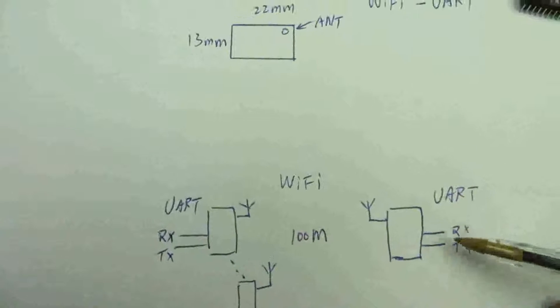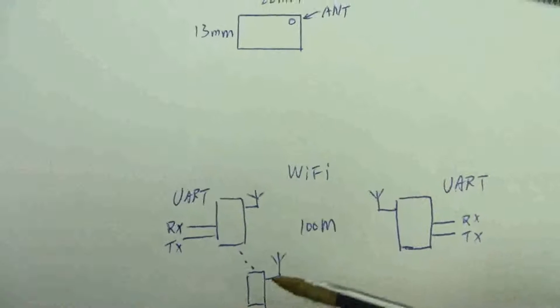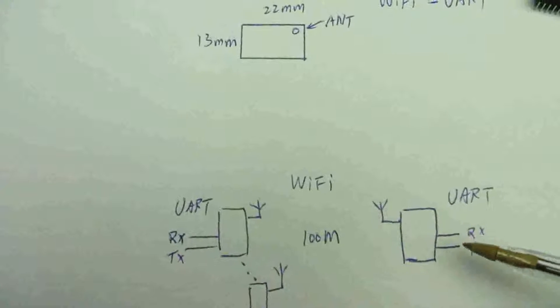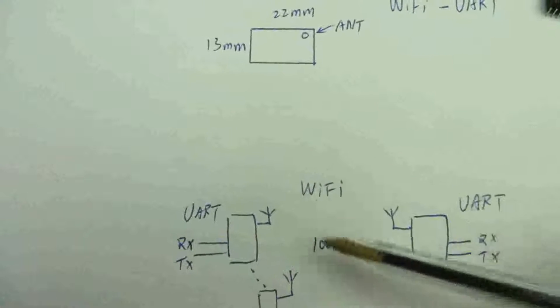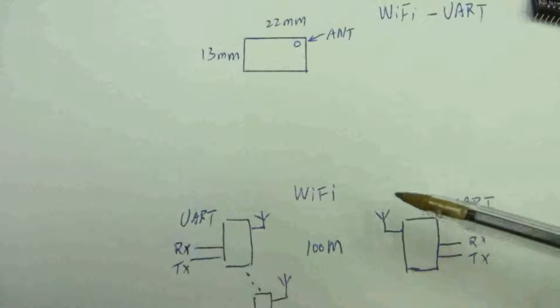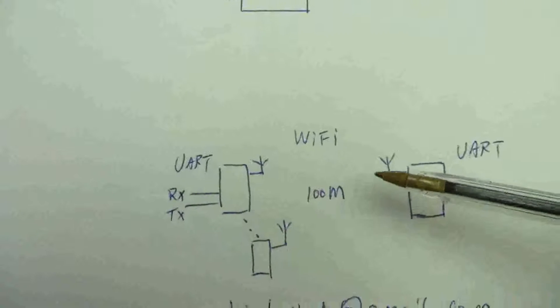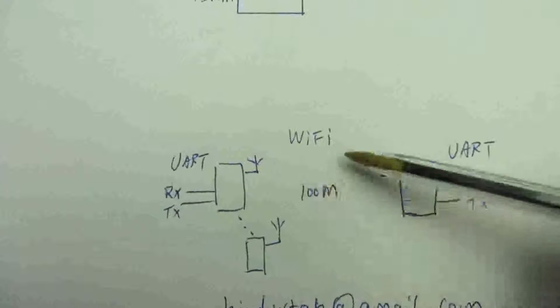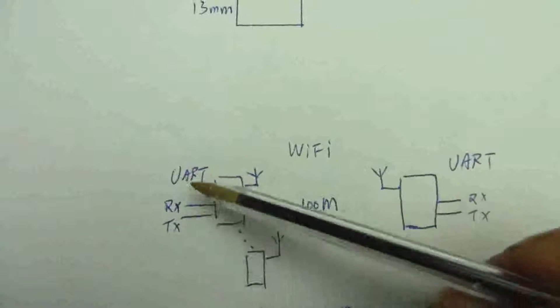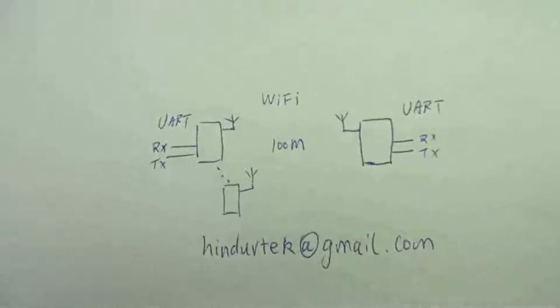Everything you send here you get here, and everything you send from here you get from here. That's called transparent. Each module is configured to automatically get a different IP. They communicate based on IP through WiFi, but on this side you transparently send UART data to each other. That's the module.